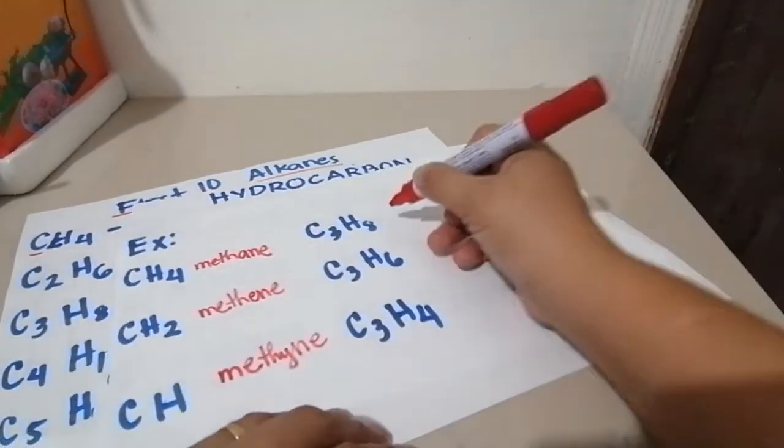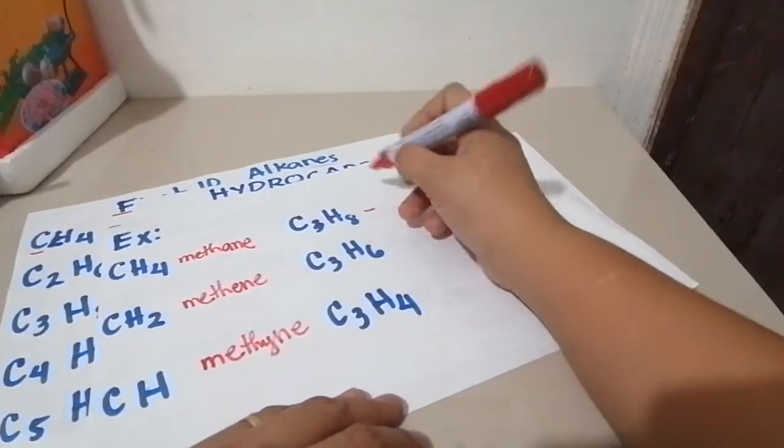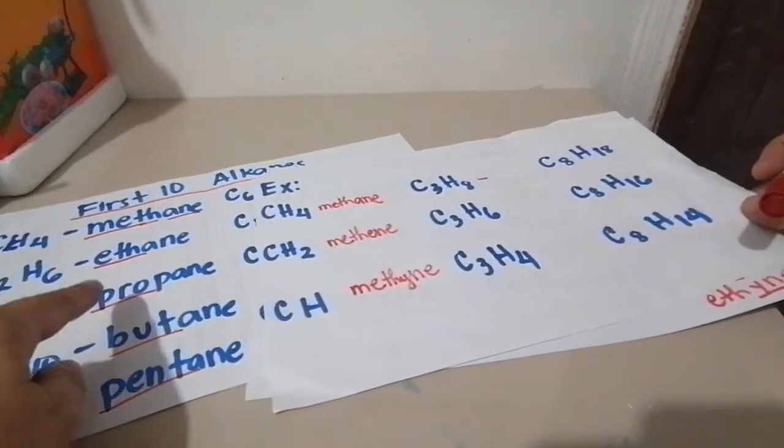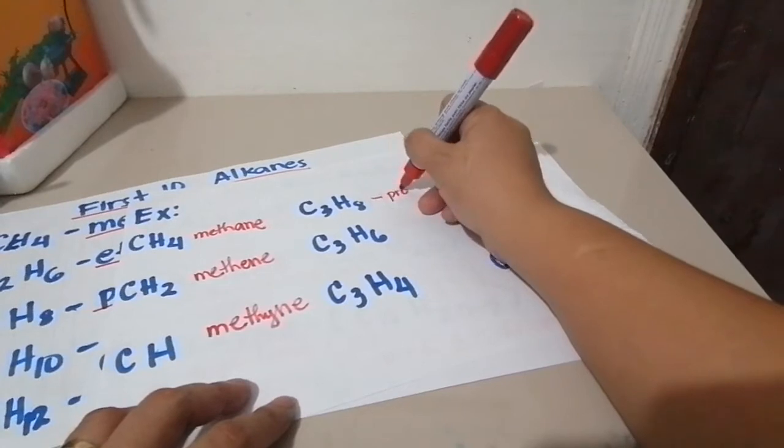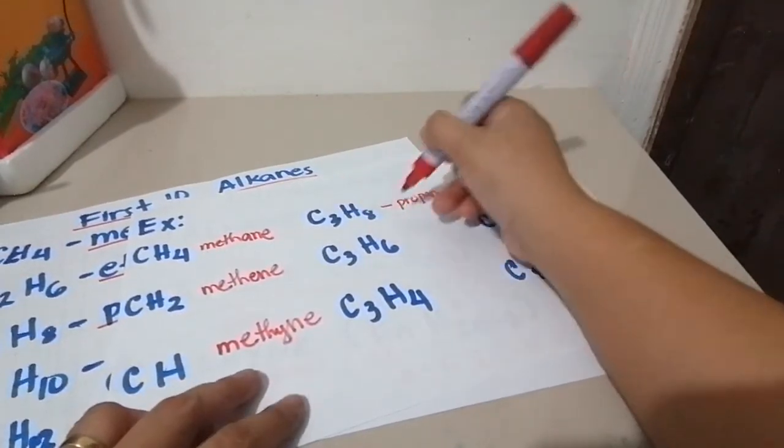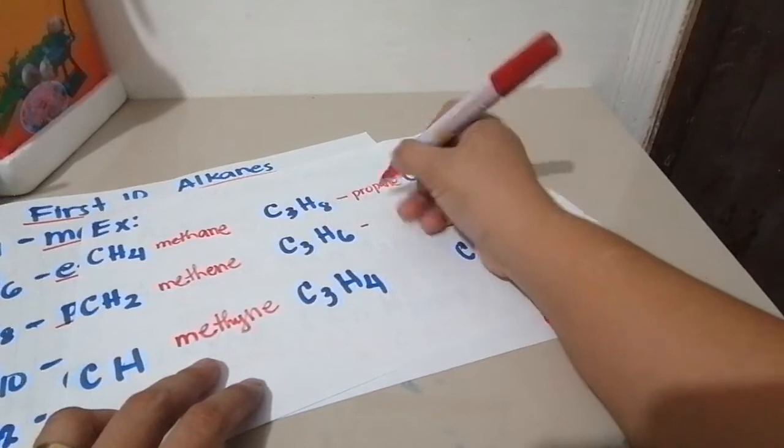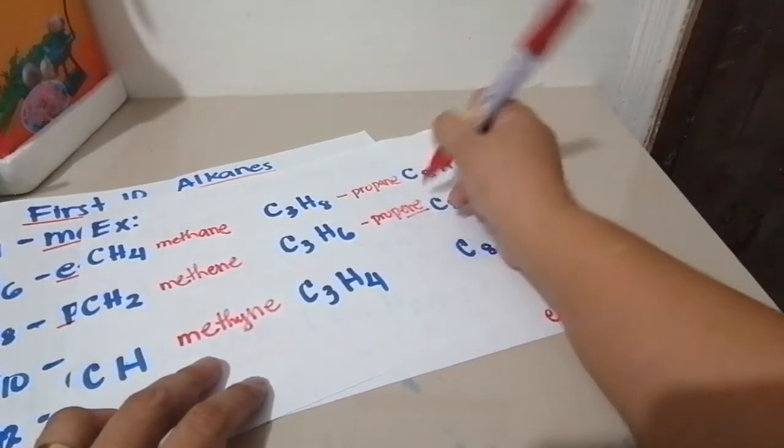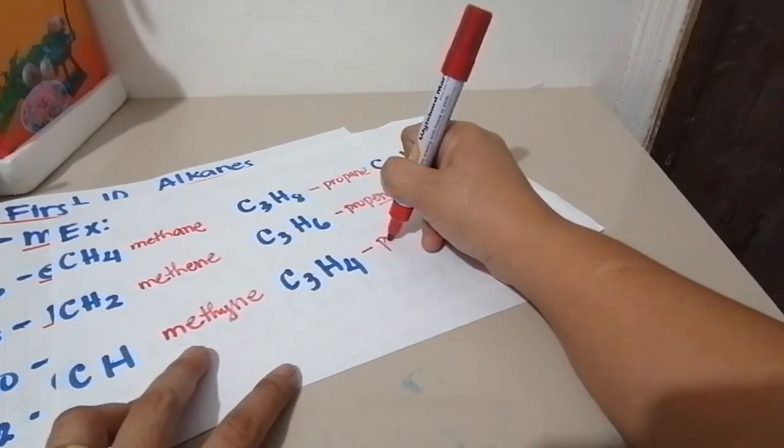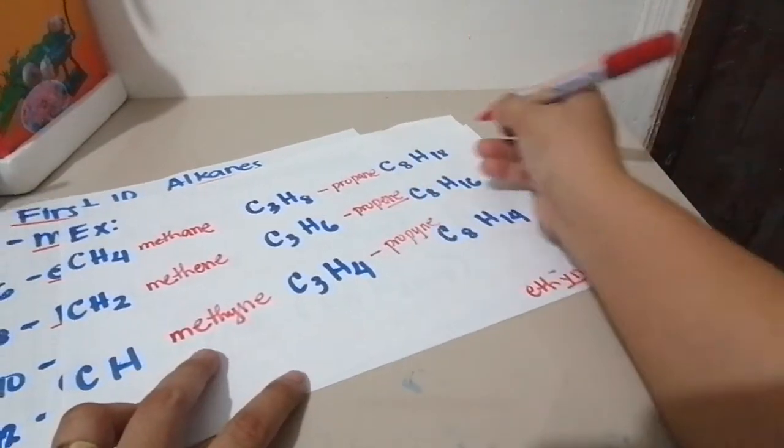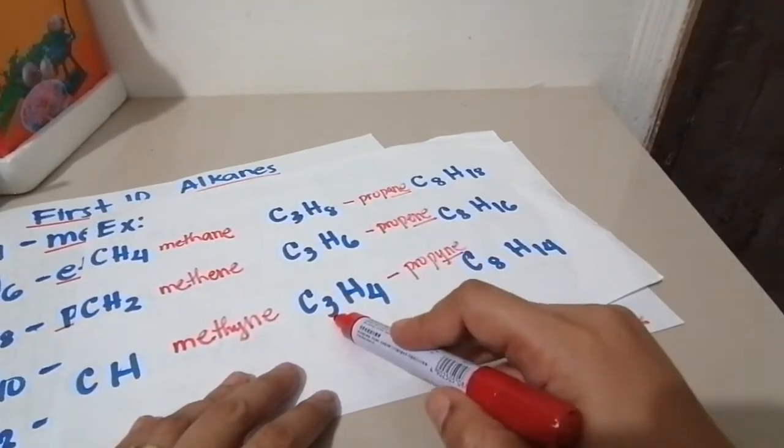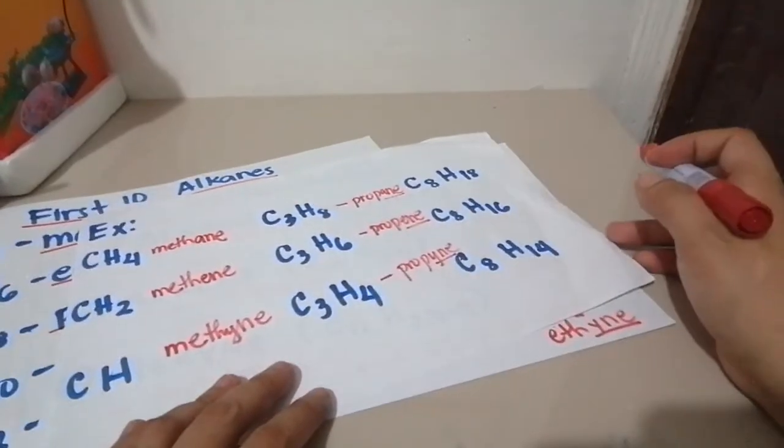Next is this. Three carbon. Because it's three carbon, it is prop. So this is propane because 3 times 2 plus 2 is 8. This is propene because this is an alkene, 3 times 2 is 6 only. And this is propyne because 3 times 2 is 6 minus 2 is 4. Look at the suffix in each.